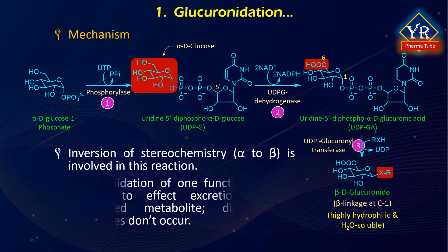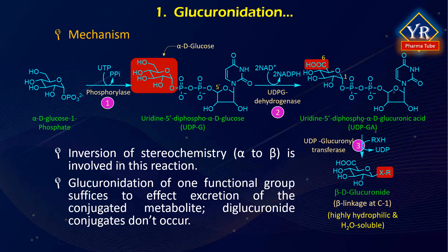The products of glucuronides are highly hydrophilic and water-soluble compounds. UDP glucuronosyltransferase is closely associated with the cytochrome P450 enzyme so that phase 1 products of drugs are efficiently conjugated. Glucuronidation of one functional group usually suffices to effect excretion of the conjugated metabolite; diglucuronide conjugates do not usually occur.